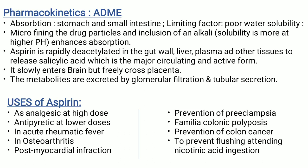Pharmacokinetics of aspirin — absorption: it is absorbed from the stomach and small intestine. Its limiting factor is poor water solubility, and micronizing the drug particles and inclusion of an alkali enhances absorption. Aspirin is rapidly deacetylated in the gut wall, liver, plasma, and other tissues to release salicylic acid, which is the major circulating and active form. It slowly enters the brain but freely crosses the placenta. Metabolites are excreted by glomerular filtration and tubular secretion. Uses: analgesic at higher doses, antipyretic at lower doses, acute rheumatic fever, osteoarthritis, post-myocardial infarction, prevention of pre-eclampsia, familial colonic polyposis, prevention of colon cancer, and to prevent flushing attending nicotinic acid ingestion.